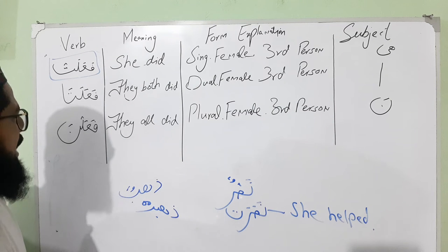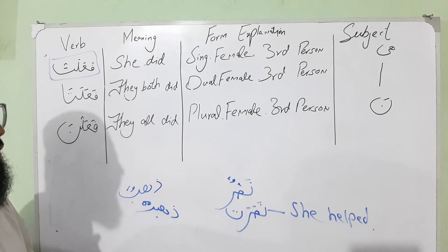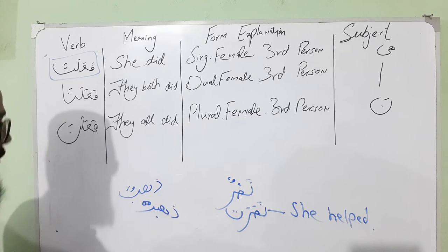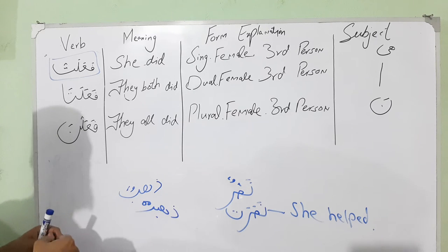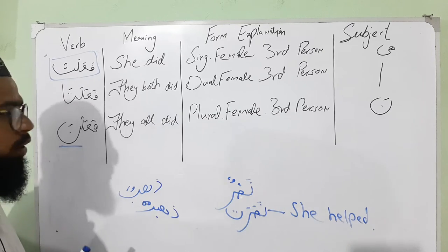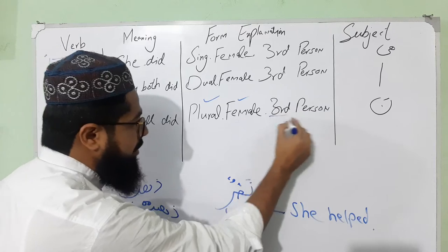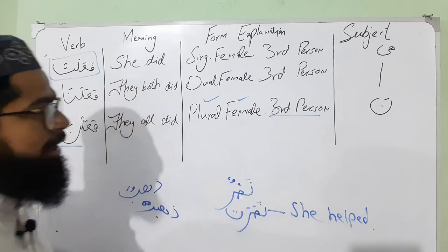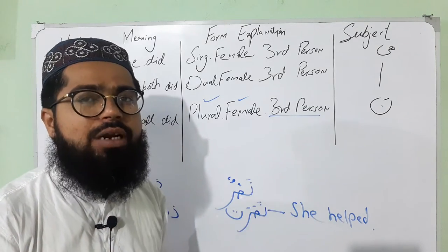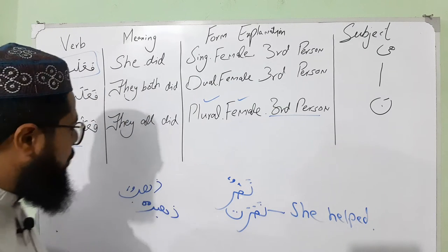The next word, faalna, means 'they all did.' It is plural, female, and third person. Here the subject would be 'nun' — faalna.